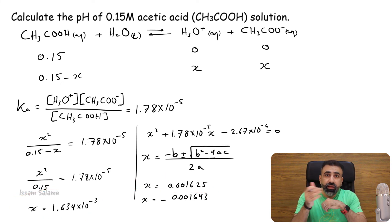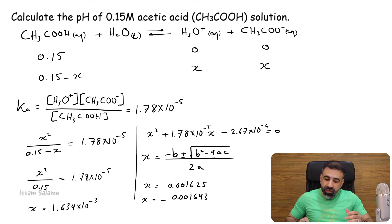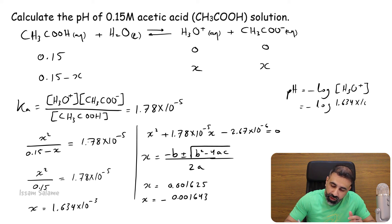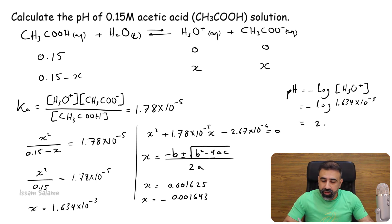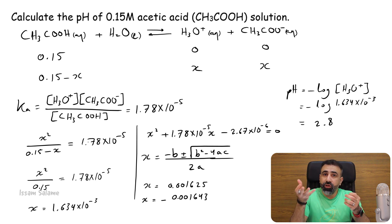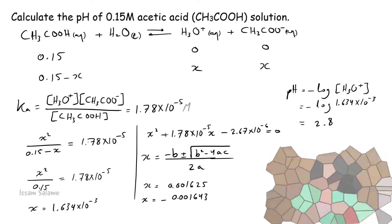So it's easier to neglect x in the denominator. When you find x, which is the concentration of hydronium ions, you can find the pH easily using pH equals minus log concentration H3O+, which is minus log 1.634 times 10 to the power minus 3, which equals 2.8. In the case of strong acids, you find pH easily because the concentration of hydronium ions equals the concentration of the acid. While for weak acids, you have to find the concentration of hydronium ions using Ka, and then find the pH. Thank you.